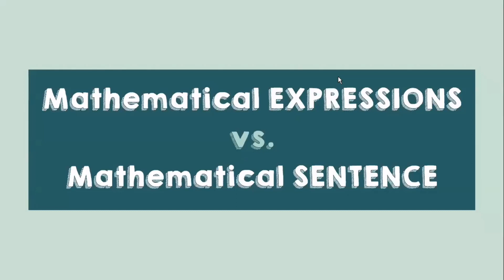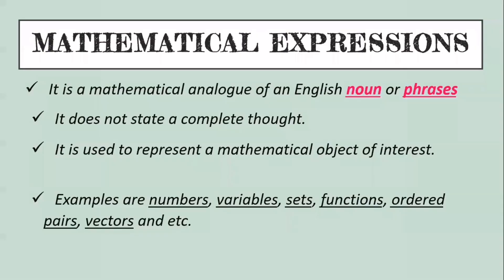Now, let's talk about the difference between expressions and the sentence. First, let us define what is the mathematical expression. It is a mathematical analog of an English noun or phrase. When we say noun, it is the name of a person, place, or thing.